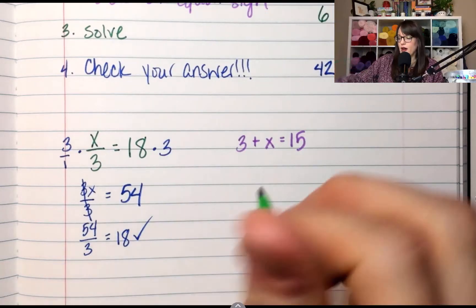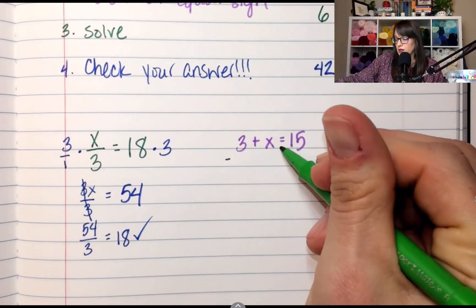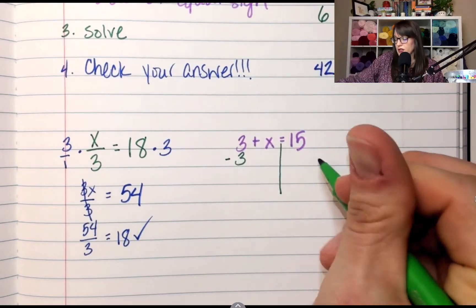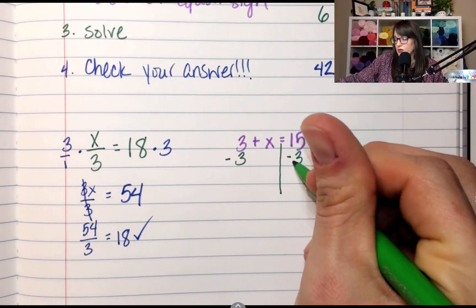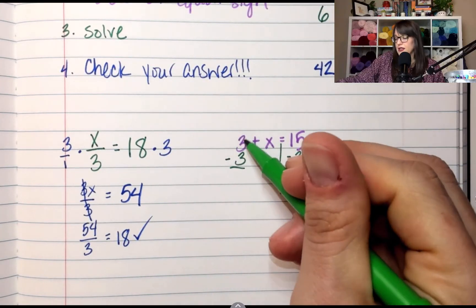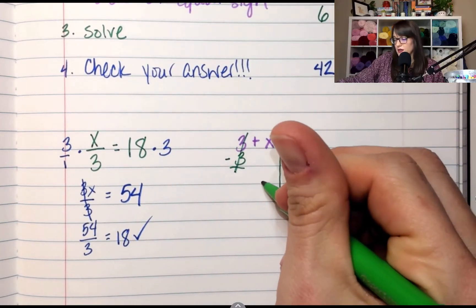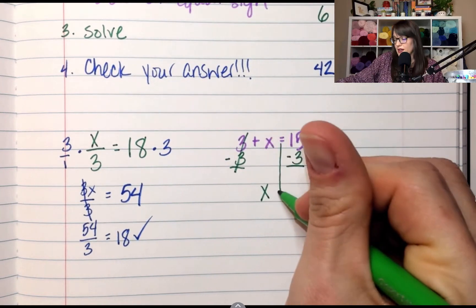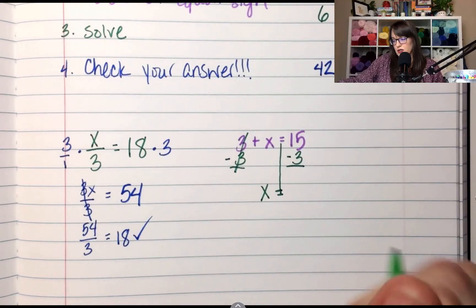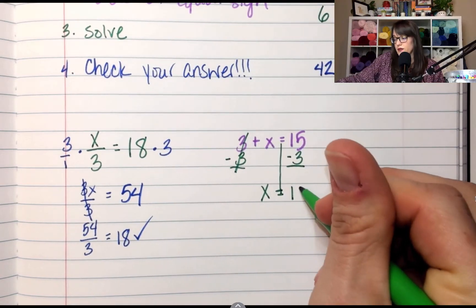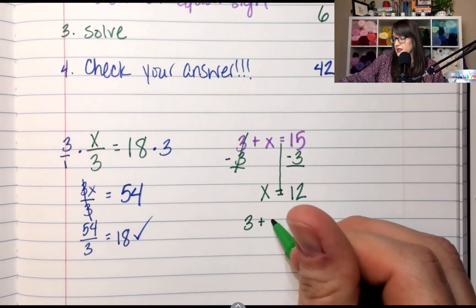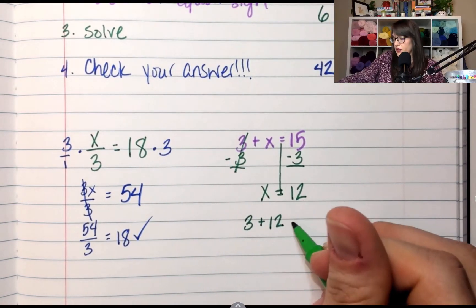Subtracting 3. So I am going to, oh I forgot to draw my line, so I'm going to minus 3 over here and minus 3 over here. 3 minus 3 is 0, so I cancel those out. I'm left with the X. What is 15 minus 3? 12. And now let's check. What is 3 plus 12? Is 15, yeah. So this one works too.